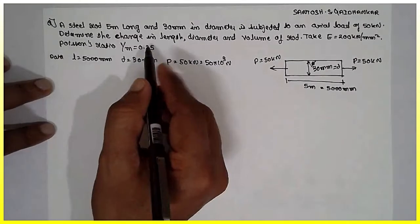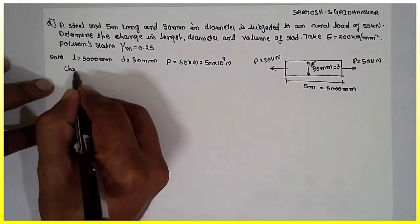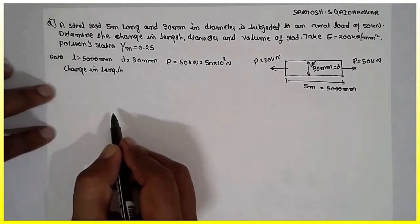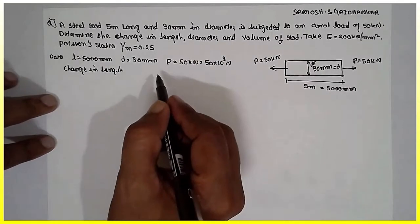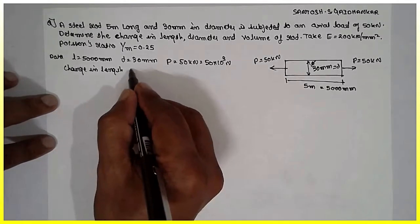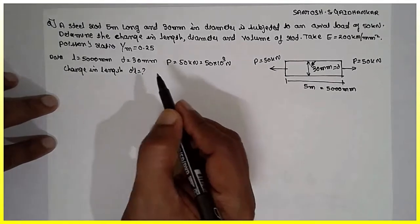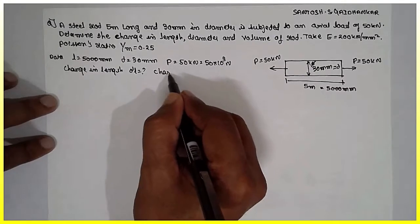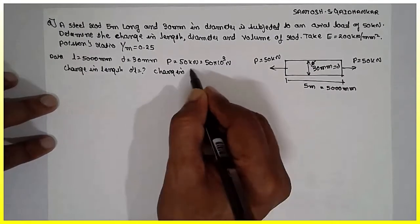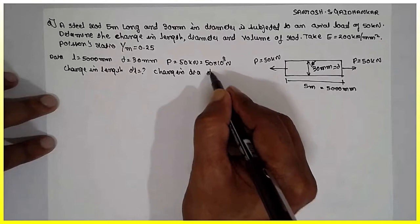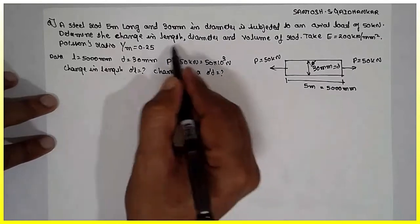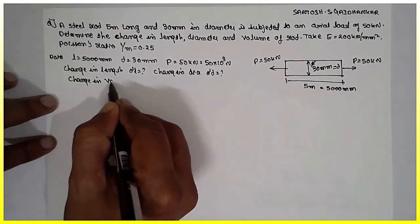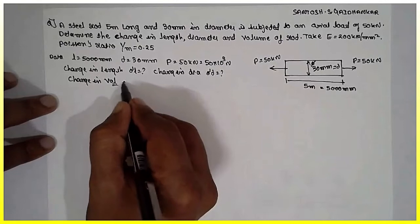We have to find out: change in length (delta L), change in diameter (delta D), and change in volume (delta V).